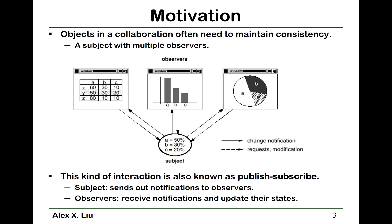The objects in a collaboration often need to maintain consistency. Often we have one subject with multiple observers. The subject has some data, and multiple observers display that data in different programs, in different shapes, in different ways.